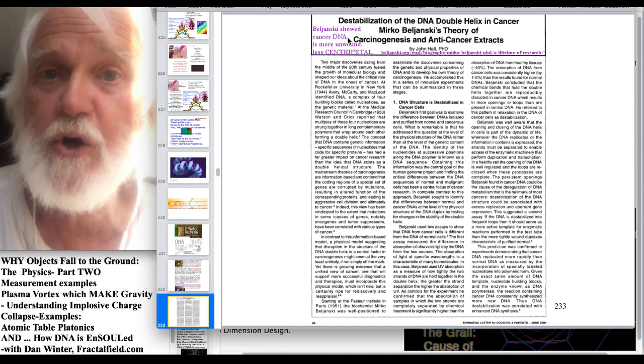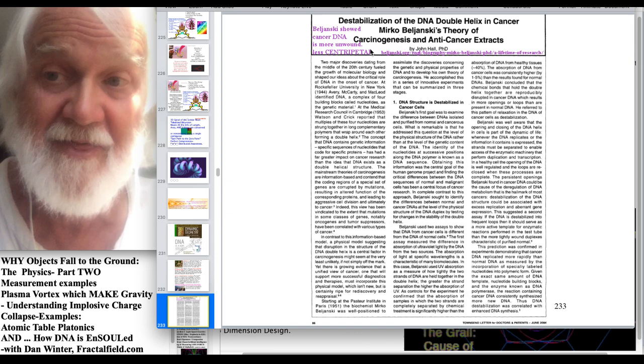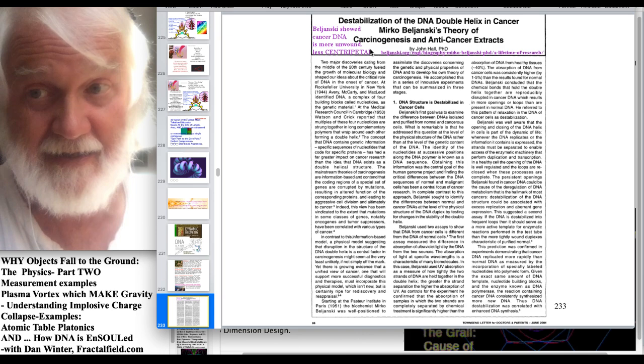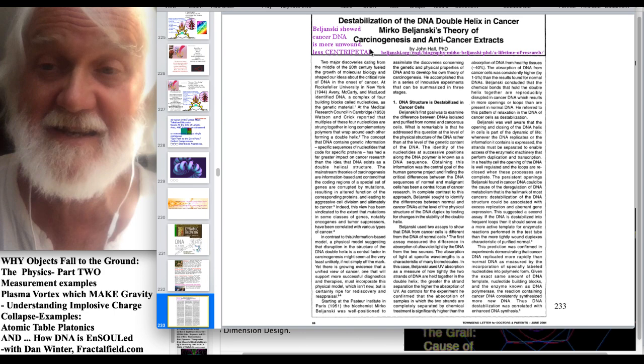And then we have all these medical papers. Beljansky showed cancer DNA is more unwound and less centripetal by measurement than healthy DNA. So you take a measurement. If your DNA is unwinding, instead of winding, instead of less embedding, if it's unpacking and unwinding, on the average, cancer DNA is less wound, more unwound, and that is unspacked. So it is the packing which makes health. But if it's too unpacked...